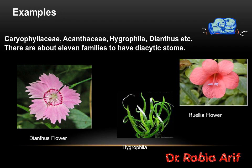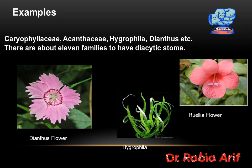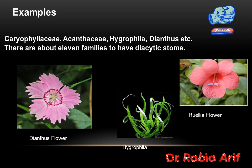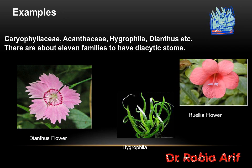Examples include the Caryophyllaceae family. There are about 11 families that have this diacytic type of stomata. For example, in the figure you can see the Dianthus flower.